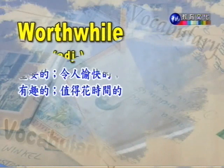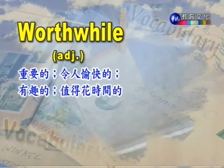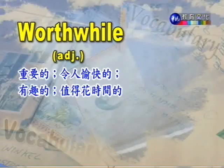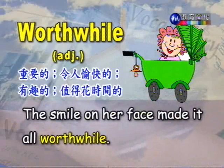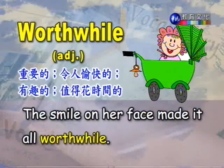第一个单字是worthwhile，形容词，重要的、令人愉快的、值得花时间的。例句：The smile on her face made it all worthwhile. 她脸上的笑容使得这一切都变得非常的值得。